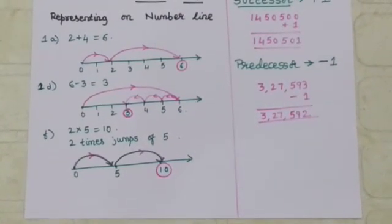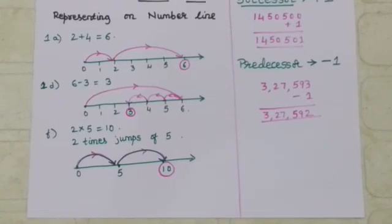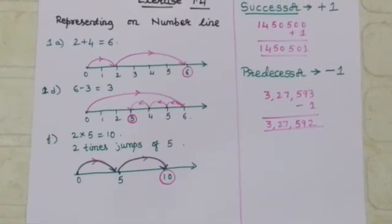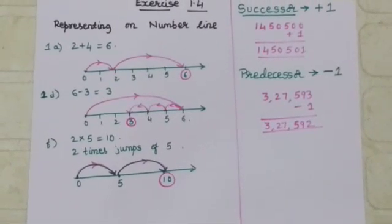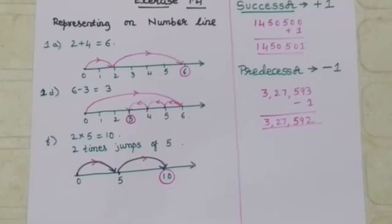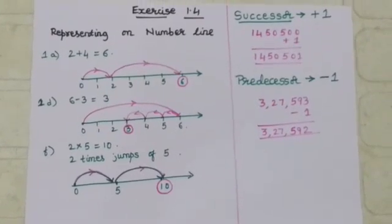For multiplication, 2 into 5 is equal to 10. That means 2 times jumps of 5: 0 to 5, 5 to 10. The answer is 10.